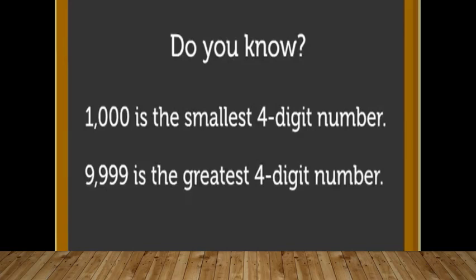Now the greatest 3-digit number was 999. Now we are coming to 4 digits. The greatest 4-digit number is 9999. When we add one more digit to 9999, it becomes 10,000, which is a 5-digit number.